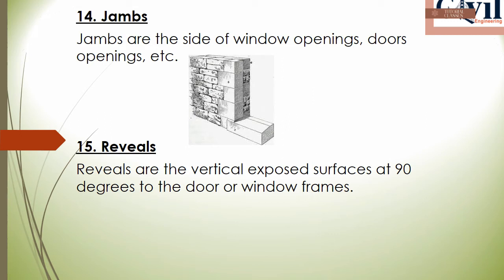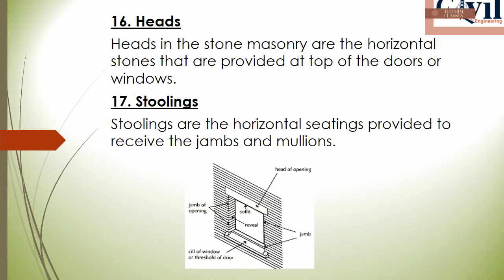The next technical term is reveals. Reveals are the exposed surfaces of masonry at window or door openings, positioned at 90 degrees vertical. Next are heads — horizontal stones provided above doors and windows.